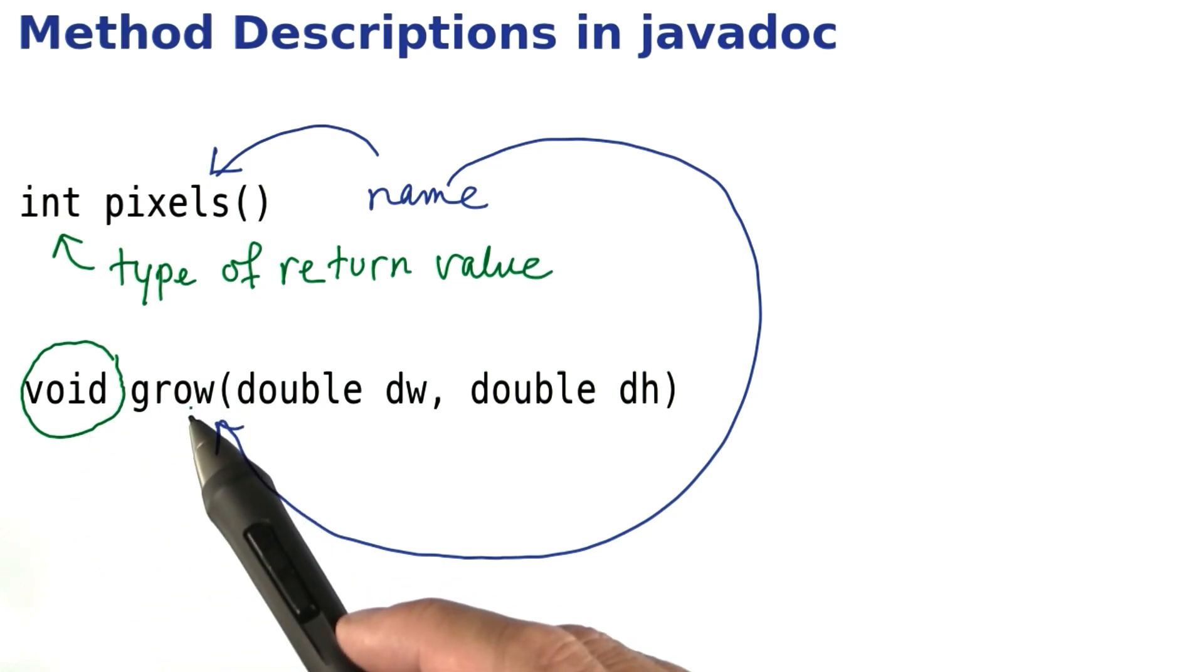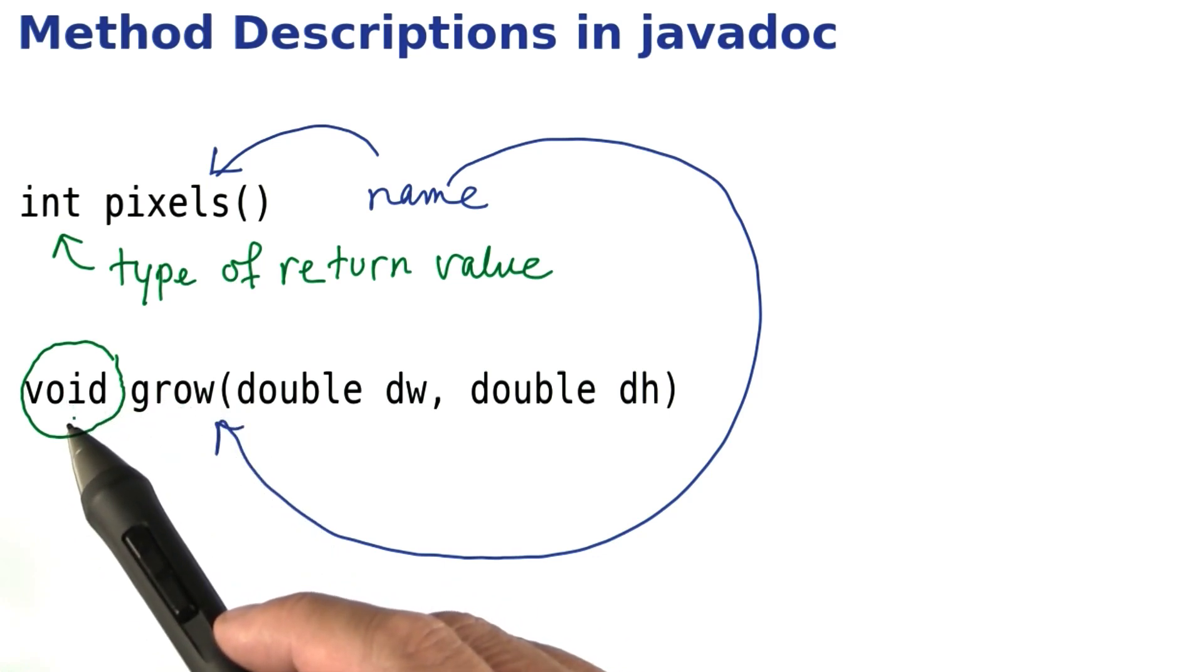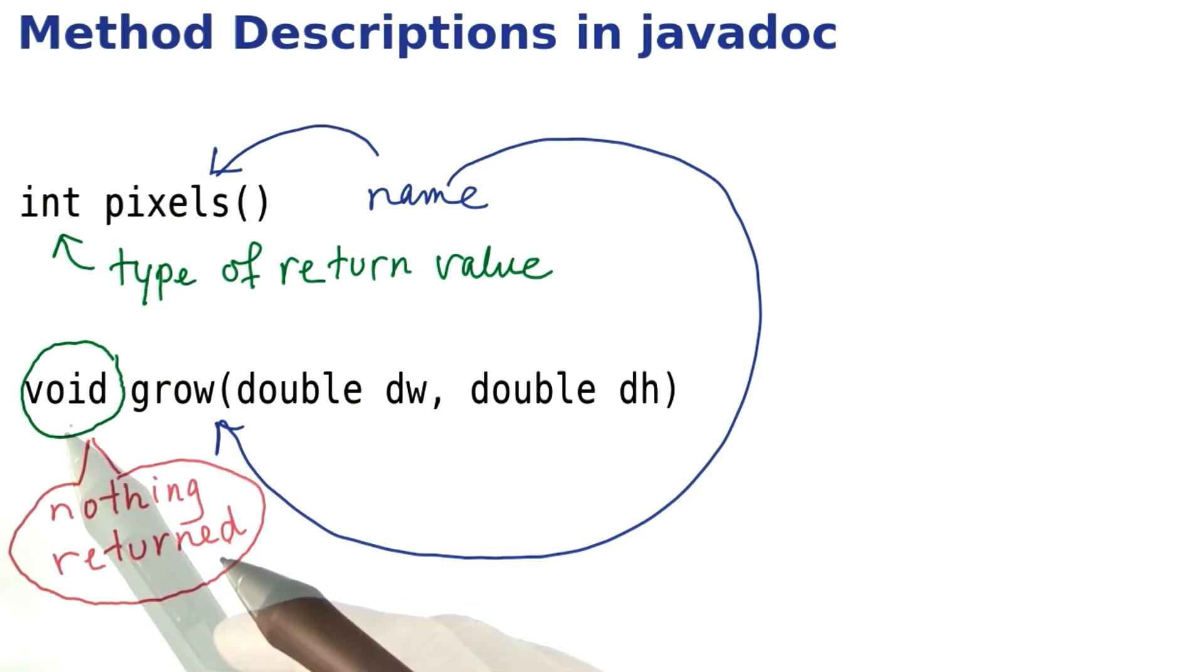But in this case, remember, the grow method doesn't return anything, and we use the special word void to denote that. Void means that nothing is returned.